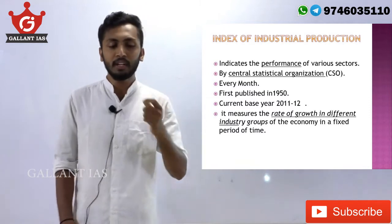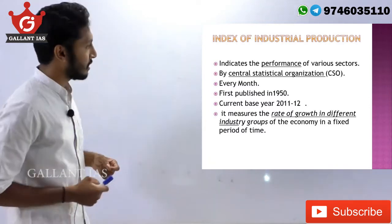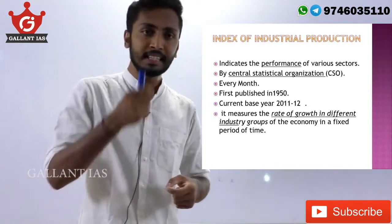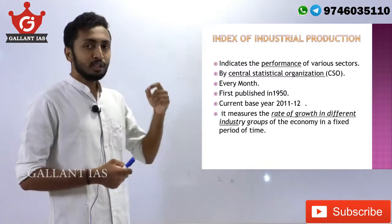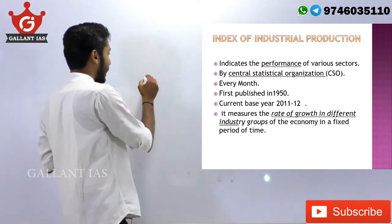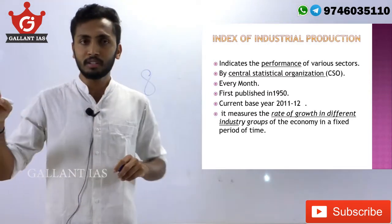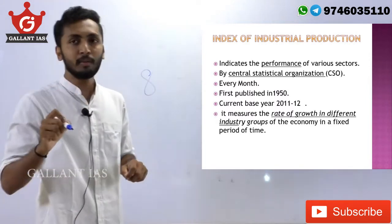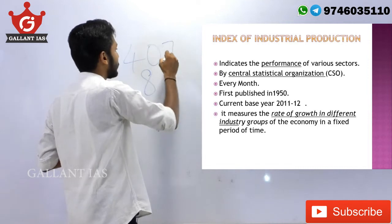Next, the Index of Industrial Production, or IIP. It indicates the performance of various sectors. The key difference between the Index of 8 Core Industries and the IIP is that the Index of 8 Core Industries considers just 8 industries, while the IIP takes into consideration around 407 industries.